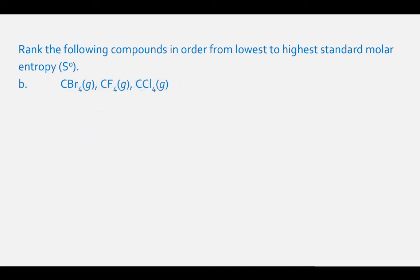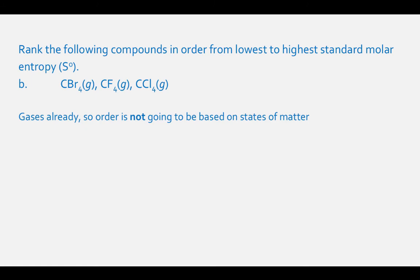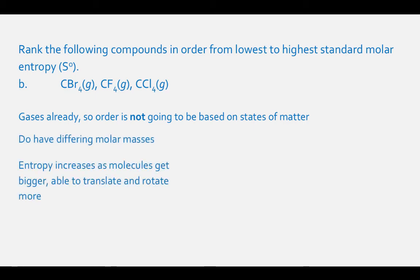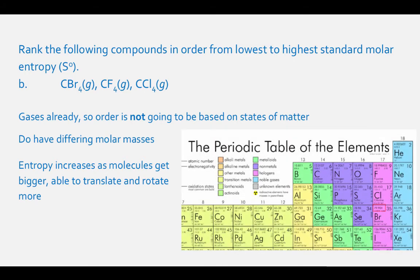For letter B, we have three gases — CBr4, CF4, and CCl4 — so the order of entropy is not determined by states of matter but by differing molar masses. Entropy increases as molecules get bigger because they can rotate and translate more. On the periodic table, bromine has an atomic mass of 79.90, fluorine has 18.99, and chlorine has 35.45. All these molecules have four of these different atoms and one carbon, so the order is: CF4 gas < CCl4 gas < CBr4 gas.